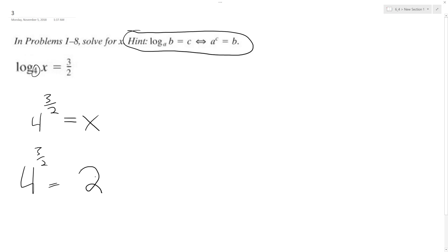So the square root of 4 is 2, and then we've got 2 raised to the 3rd, and then we end up with 8.